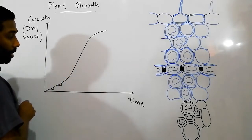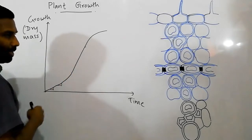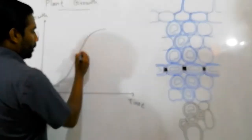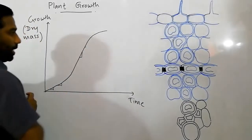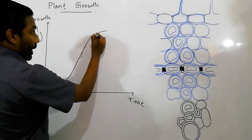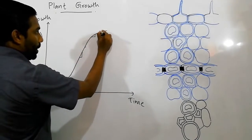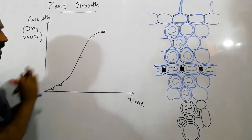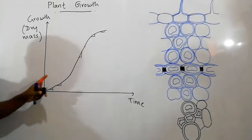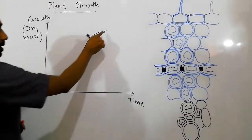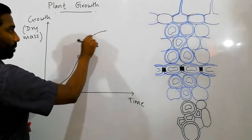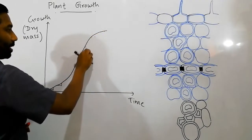We can observe this growth rate in organisms — not only in plants but in animals as well. After a certain period, growth rate slows down again. Towards the end of the lifespan, growth rate is comparatively low. Copy this graph onto your notes — the x-axis is time or lifespan, the y-axis is growth or dry mass.